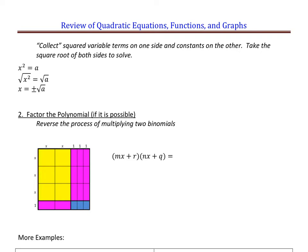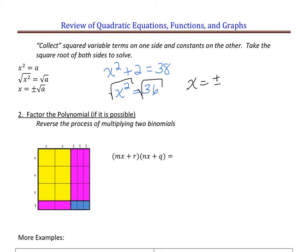Let's look at the first and simplest approach: taking the square root. Collect the squared variable terms on one side and the constants on the opposite side, then simply take the square root of both sides. The generic form is x² = a, so x = ±√a — there is a positive and a negative solution. For example: x² + 2 = 38. Subtract 2 from both sides to get x² = 36. Take the square root and x = ±6.